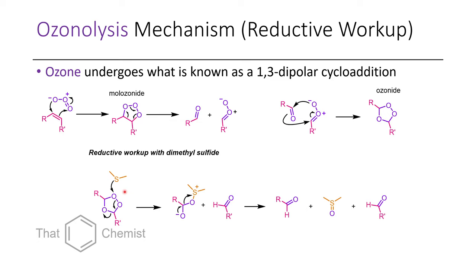The workup can be done with a reductant such as dimethyl sulfide. This mechanism shows what that would look like: dimethyl sulfide is able to attack at this oxygen, which liberates one of the equivalents of aldehyde. Since R and R' are different in this case, you might form two different aldehydes. Then in the next step, the alkoxide is able to collapse down, displacing DMSO as a leaving group, and we've formed our two equivalents of aldehydes as well as DMSO.